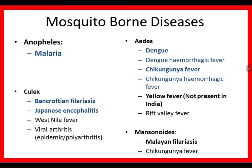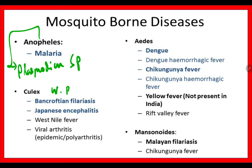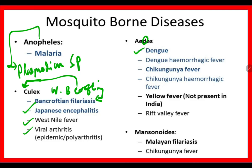Diseases caused by each mosquito: Anopheles causes malaria — malaria is caused by Plasmodium species, so P for Plasmodium malaria. Culex transmits Wuchereria bancrofti, causing Bancroftian filariasis; Culex with pigs causes Japanese encephalitis; other diseases include Besnial fever and viral arthritis. Aedes — D for dengue and chikungunya, as well as yellow fever, though yellow fever is not present in India. Mansonia causes malaria and filariasis — it is caused by Brugia malayi, Ashithia, and related species similar to Wuchereria bancrofti.